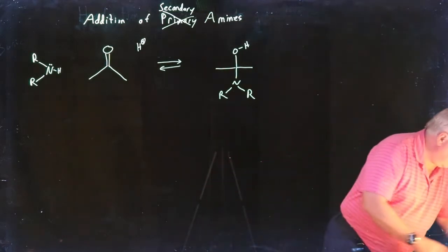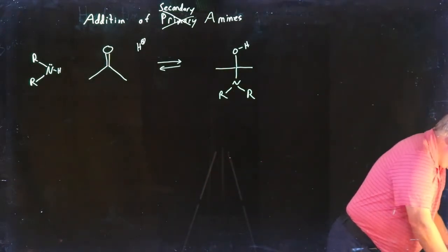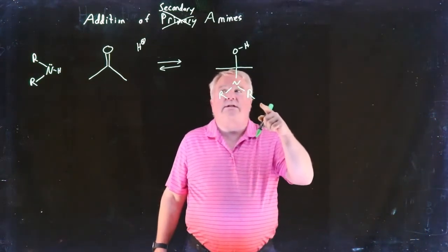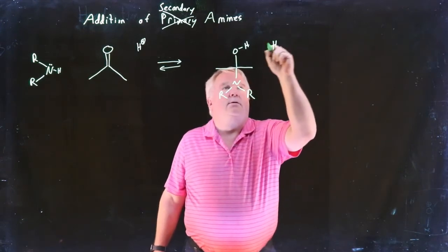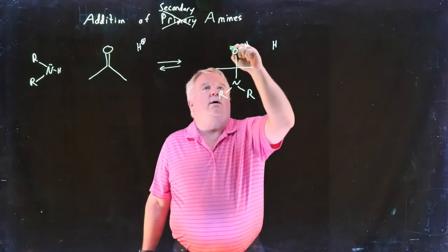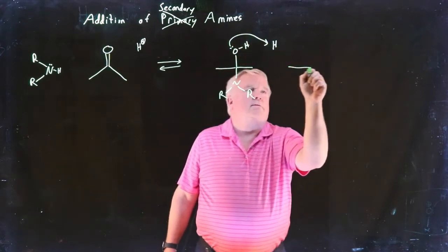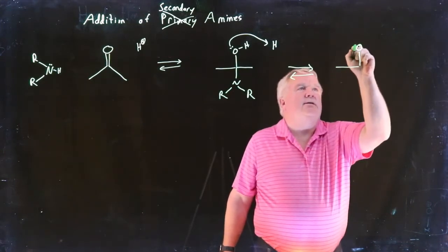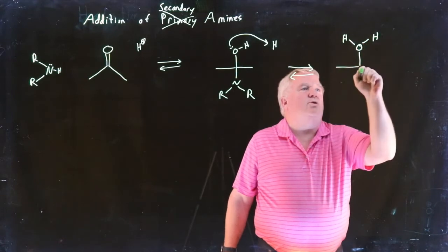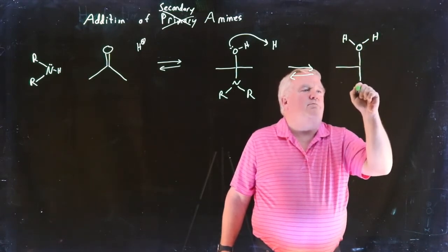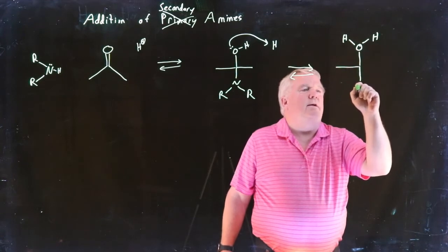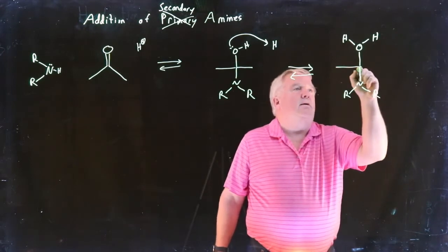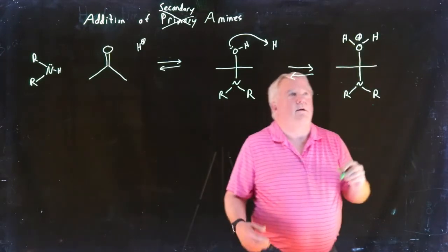So now we still have our acid around, and we're going to do the same thing we did last time. We're going to protonate the oxygen of this amino alcohol, and when we do that we again get the same species we had last time. We have an amino group attached to a carbon along with a hydroxyl that's now been protonated and activated to give a very good leaving group, and that is water.